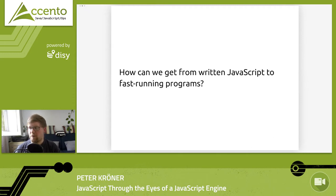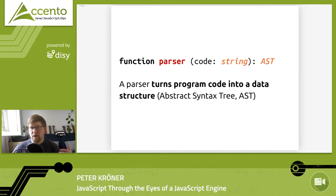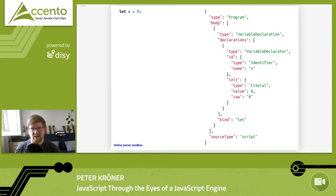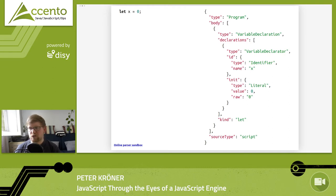How can we get from written JavaScript that's human-readable to a fast-running program? There are two steps. The first is to make handwritten JavaScript understandable to the computer — this is where the parser comes in. A parser is basically just a function that takes code and turns it into a data structure the computer can operate on. This data structure is called an Abstract Syntax Tree, or AST. The AST is a tree data structure — on the left is our JavaScript, on the right is the AST, with a direct connection for basically every bit of the code.